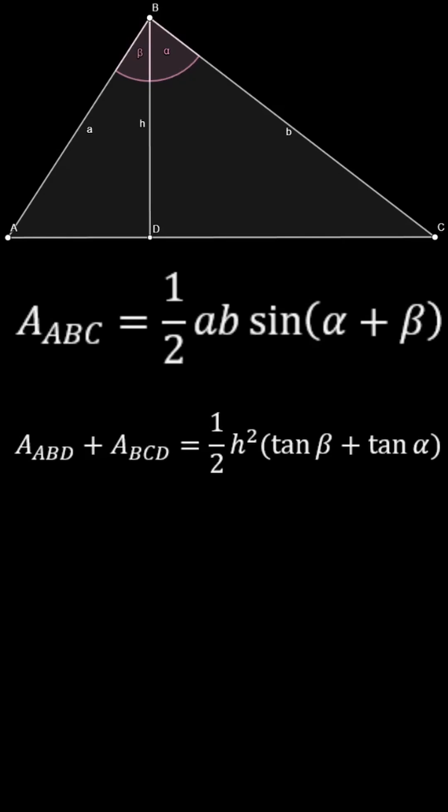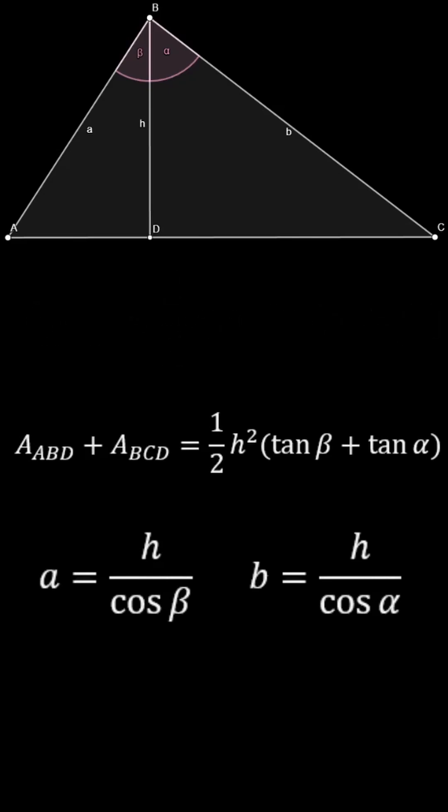A and B, the two sides of the triangle, can also be expressed in trigonometric functions of the angles, as H over the cosine of their respective angle alpha or beta. Then we can substitute these values into the area for triangle ABC.